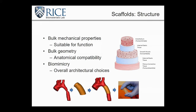If we're looking at something like a blood vessel, we want to make sure the materials we use have high tensile strength and high elasticity, compared to a material we might use for an osteochondral defect. Besides the bulk mechanical properties, we also need to get the geometry right — not just on the macro scale, but on a micro scale. The overall architectural choices we make with our scaffold can be designed so that we can replicate what the cell sees at a cellular level.